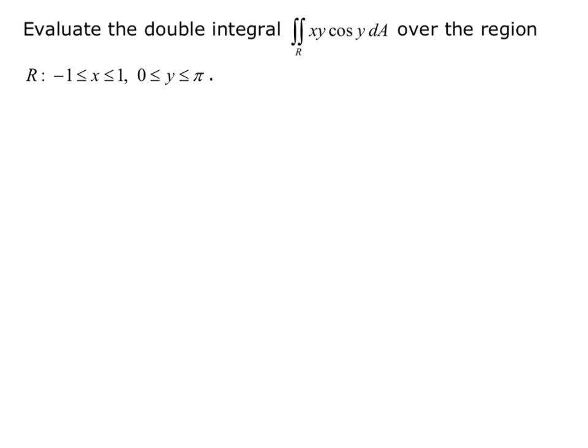We want to evaluate the double integral over R of xy cosine y dA over the region R where x goes from negative 1 to 1 and y goes from 0 to pi. So let's set up our double integral both ways and then figure out which one would give us an easier integration.